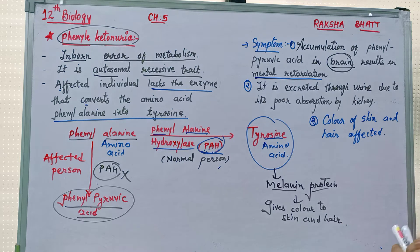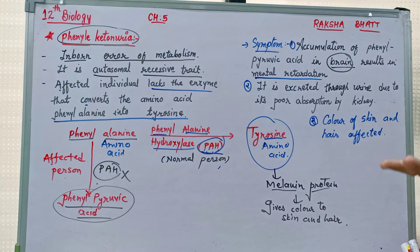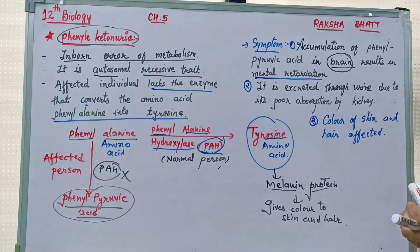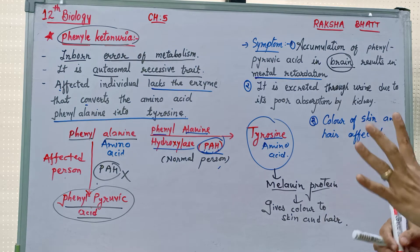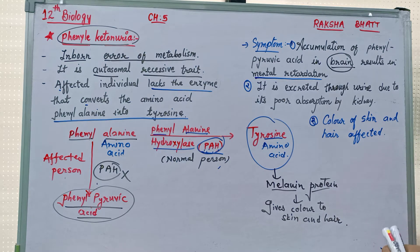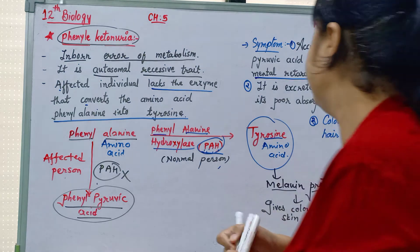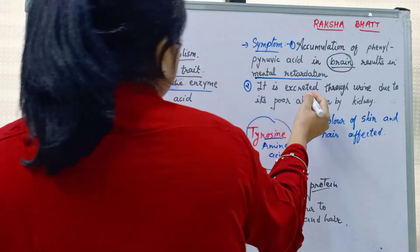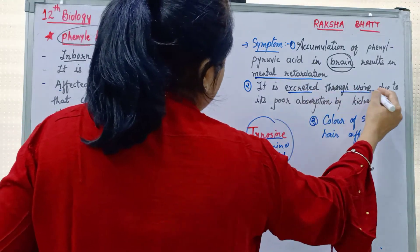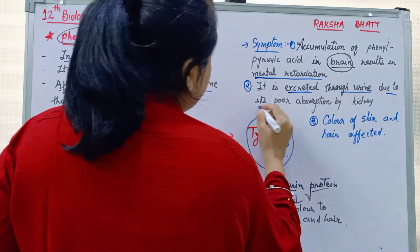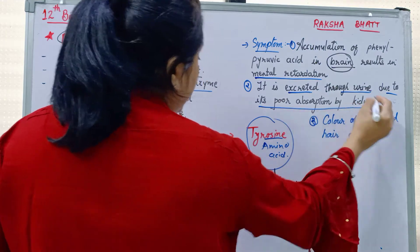Second symptom: phenylpyruvic acid is very toxic, so our kidneys absorb very little of it. As a result, a large amount of phenylpyruvic acid is excreted out through urine due to its poor absorption by the kidney.